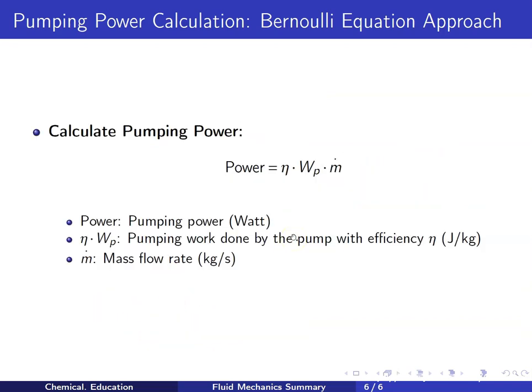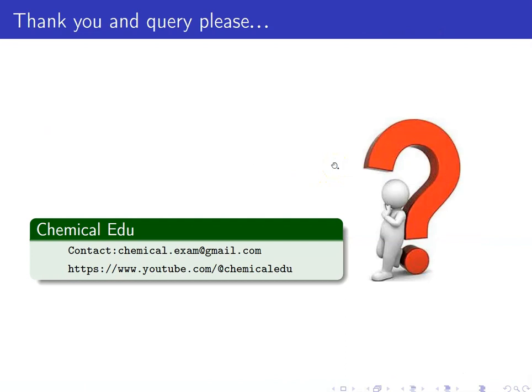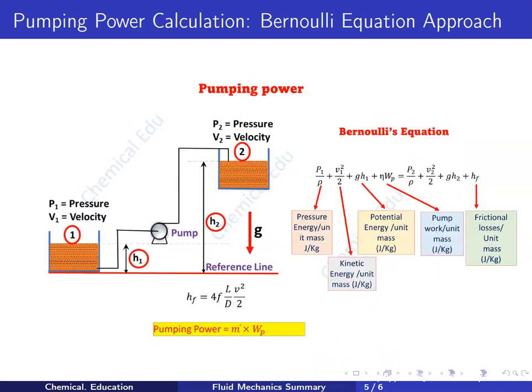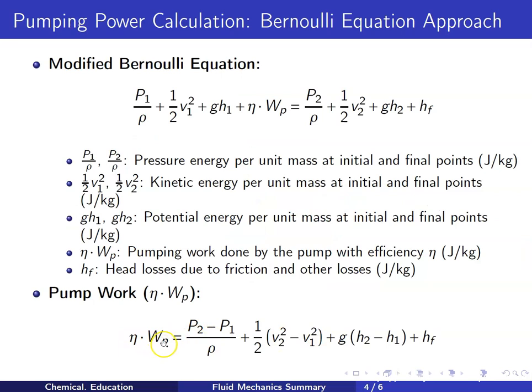The pumping power is calculated as: Power = η·wp × ṁ, where η·wp is the pump work done by the pump with efficiency η (J/kg) and ṁ is the mass flow rate (kg/s). So first apply Bernoulli's equation, then calculate η·wp, and finally multiply by the mass flow rate to get pumping power.